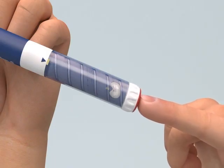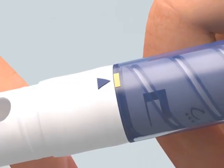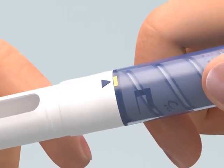Be sure to check that the cartridge holder is still attached to the pen body with a blue arrow lined up with a yellow or white mark. If so, the right dose can now be dialed.